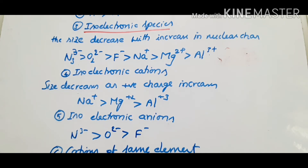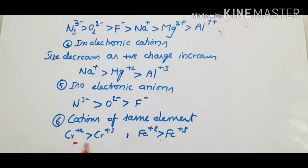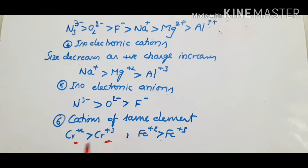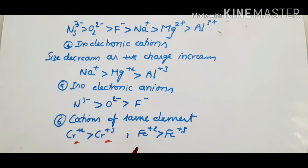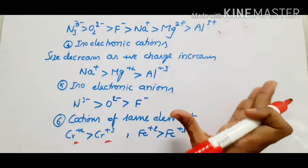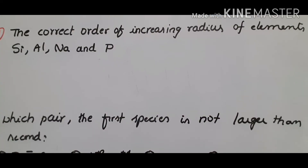Next point: cations of the same element. For cations of the same element, a +2 ion is greater in size than a +3 ion. More positive charge means smaller size, because more electrons are lost — the electron cloud contracts. More negative charge means the electron cloud expands, so the size is larger.